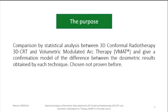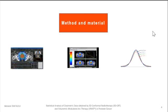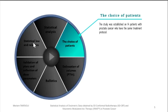This study used the student test for a sample of 14 patients with prostate cancer. This test applies to dosimetric parameters obtained after validation of treatment plans according to each radiotherapy technique. Our working method is established on several essential stages, which I present in the form of a well, and its direction of rotation is that of the clock.